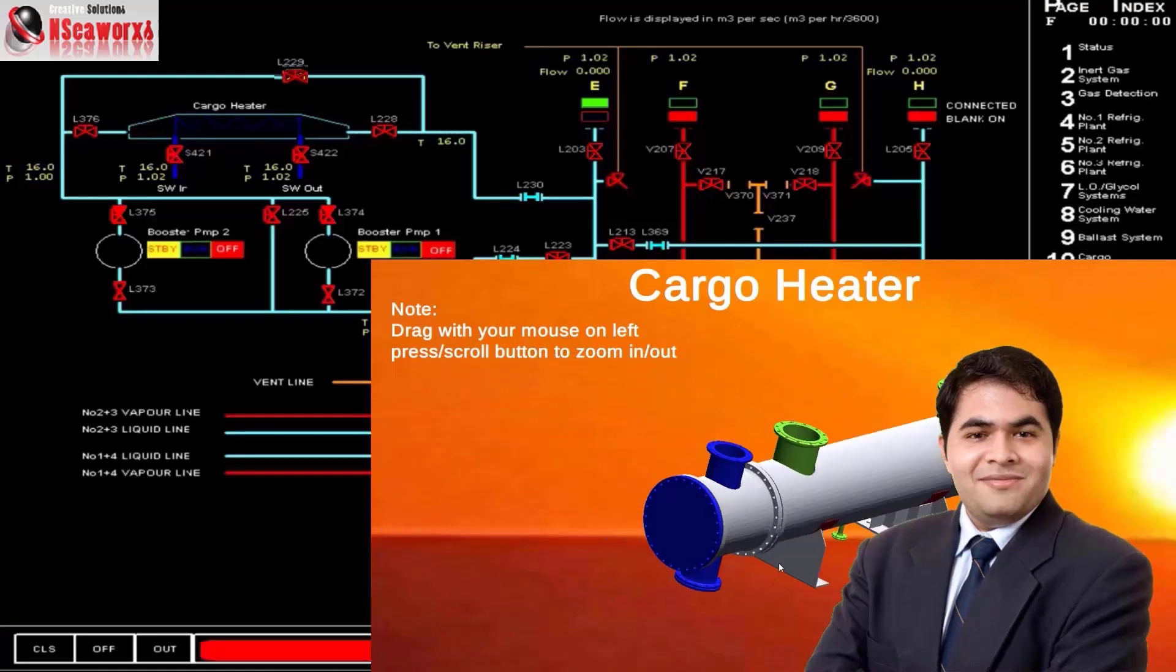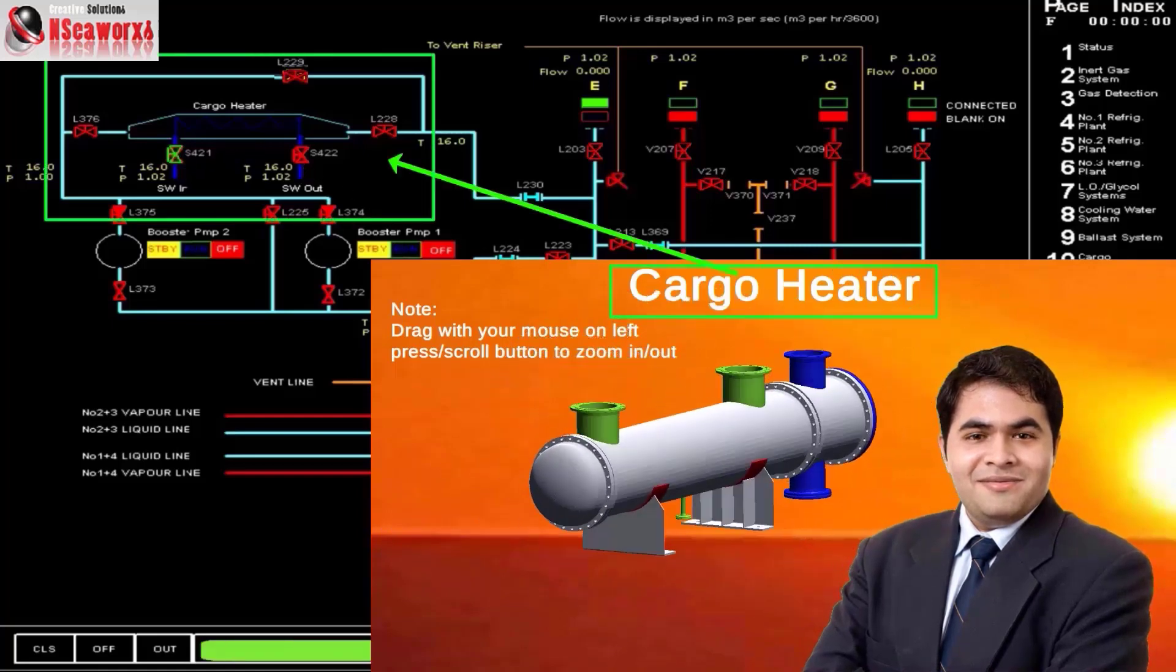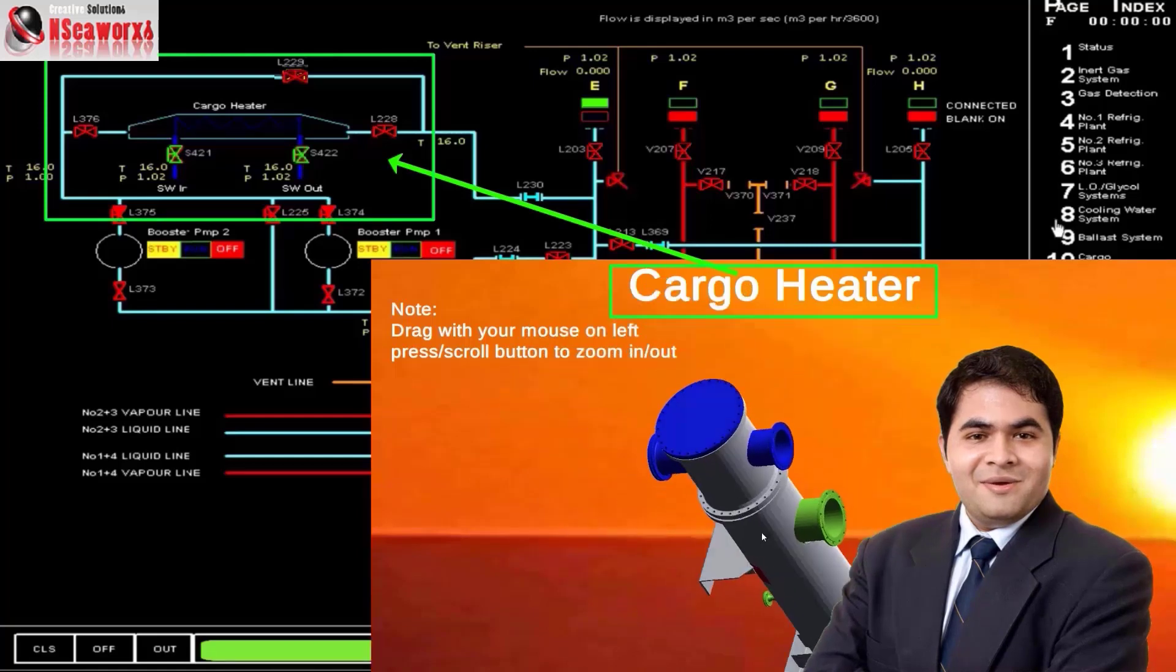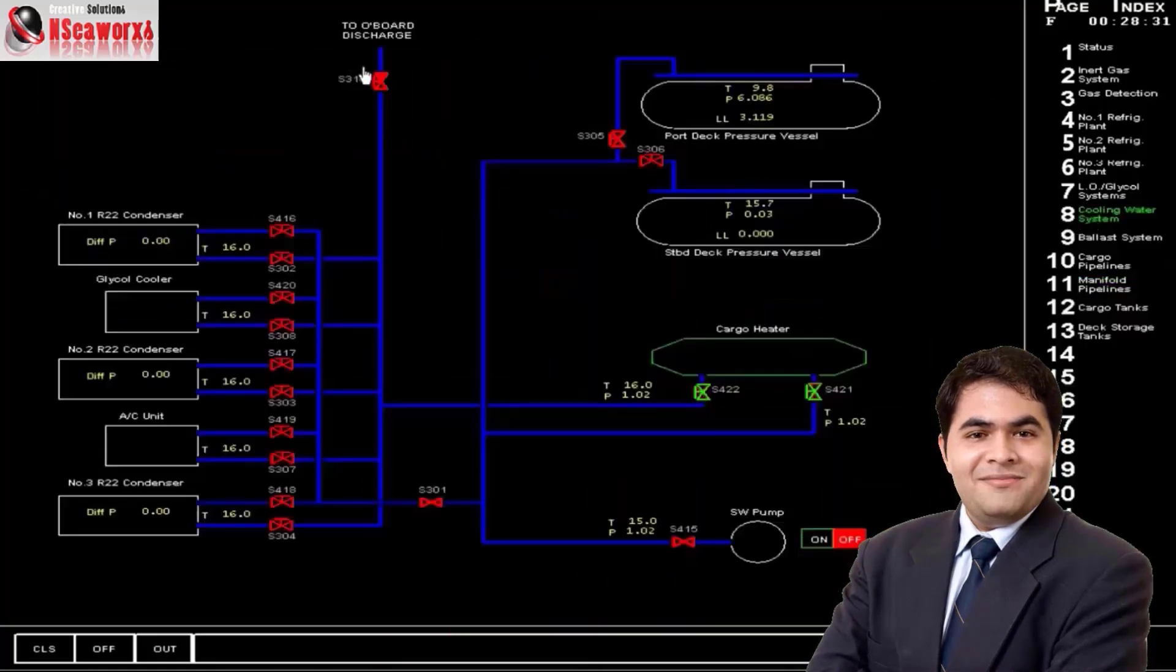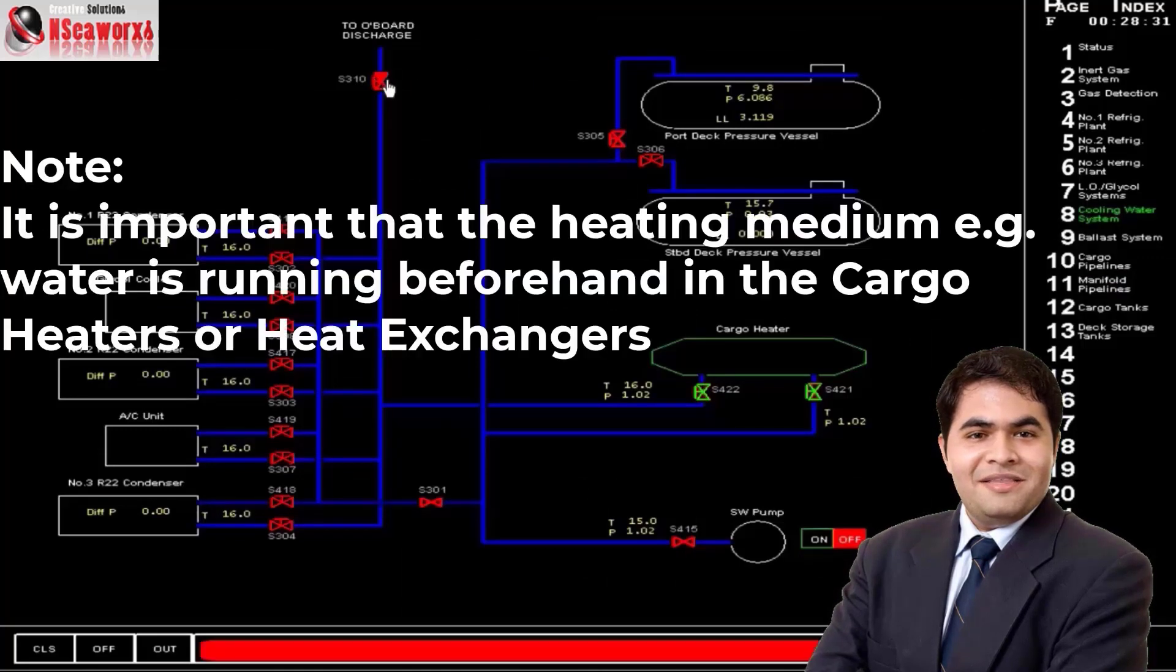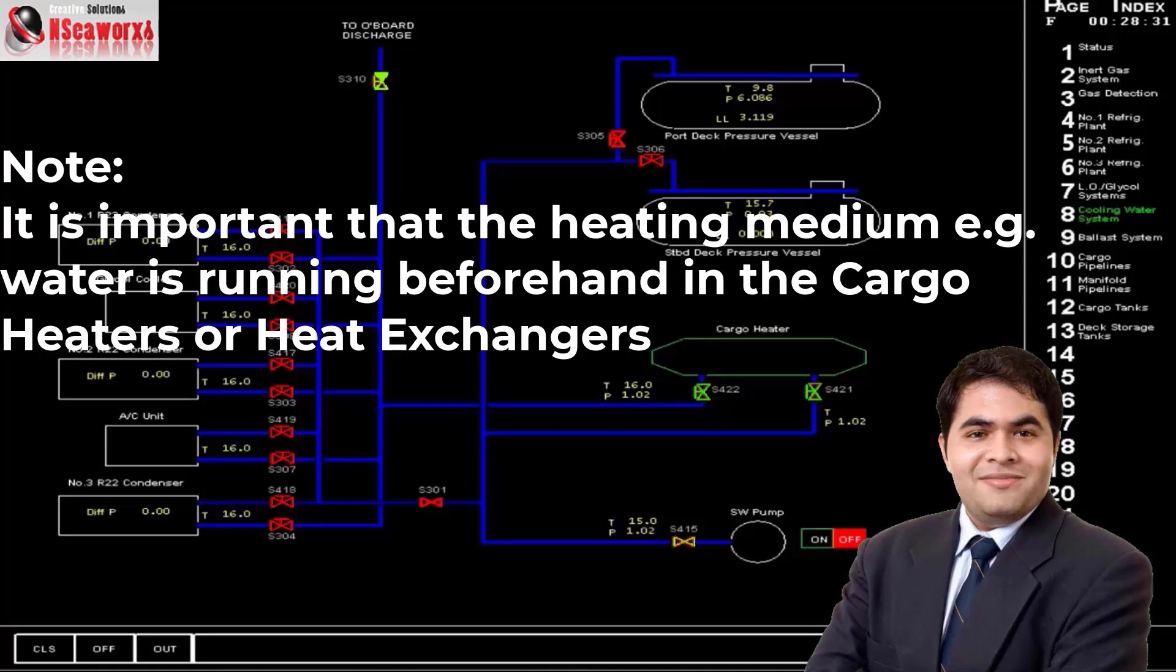Then we can open the supply of seawater. We can also go to the cooling water system. As you can see, it's open. And make sure that the overboard discharge valve is open as well, and the supply of seawater pump. Now, we can start the pump.